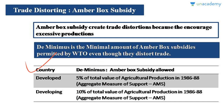De minimis is the minimal amount of amber box subsidy permitted by WTO. For developed countries, it is 5% of the total value of agricultural production in the base period of 1986-88 — that base value is called the Aggregate Measure of Support. For developing countries, the amount is 10%. So India can give up to 10% of its agricultural production value as direct subsidy to its farmers — India cannot go beyond that.